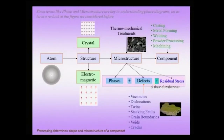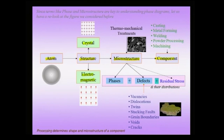Now, we have defined the term microstructure before and it is worthwhile to revisit the concept of a phase and the concept of a microstructure. We have seen that we can start from an atom and go to the structure, and the crystal structure can be based on crystal structure or on a physical property like an electromagnetic structure. Then we go to the next scale — the scale of microstructure — and finally to the scale of the component.